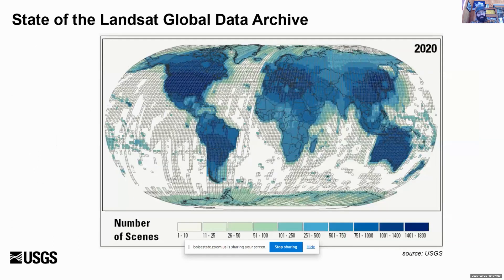This shows the state of the Landsat Global Archive as of 2020. Over time Landsat has evolved to be a global mission, and you can see variation in the amount of data available across the globe over time. Now with Landsat 8 and Landsat 9, we're moving into more of a systematic global observation capability.